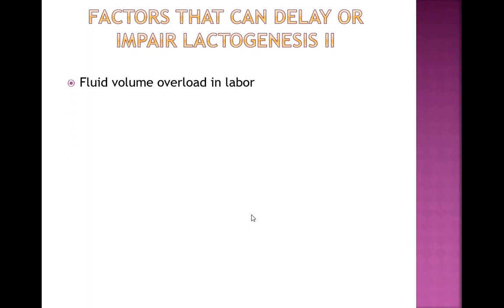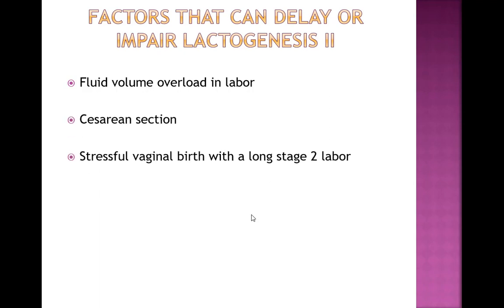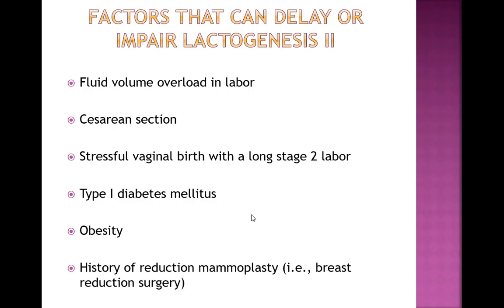Factors that can delay lactogenesis 2 include fluid volume overload during labor — meaning a lot of IV fluids — C-section, and a very stressful vaginal birth with a long stage two labor (stage two being when the mother is pushing the baby out). Also included are type 1 diabetes, obesity, and a history of reduction mammoplasty — breast reduction surgery that can sever milk ducts and impair lactogenesis 2.